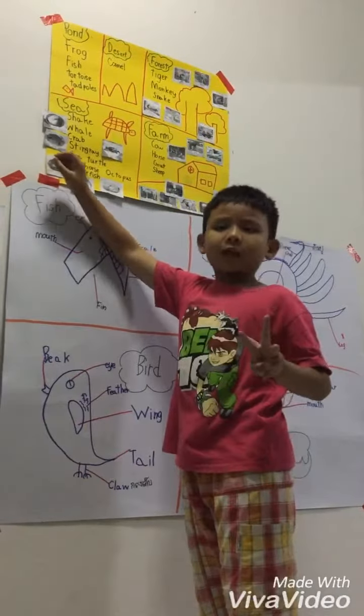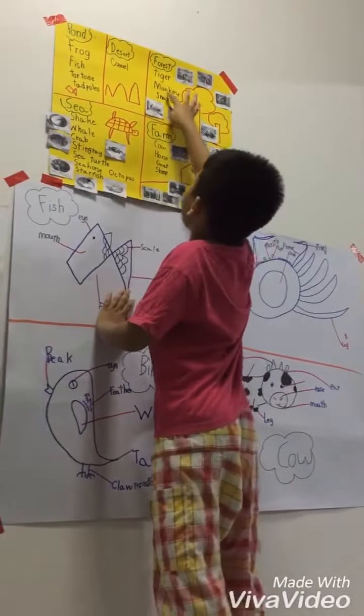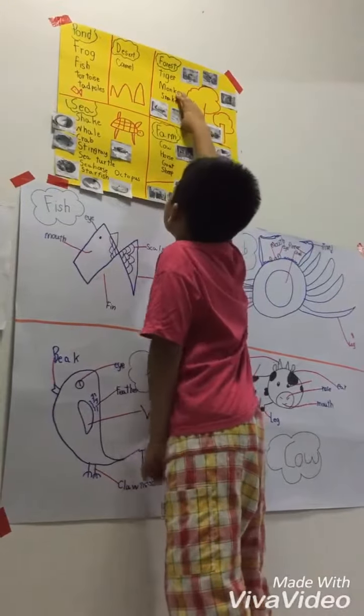Number three, forest. Tiger. Monkey. Snake.